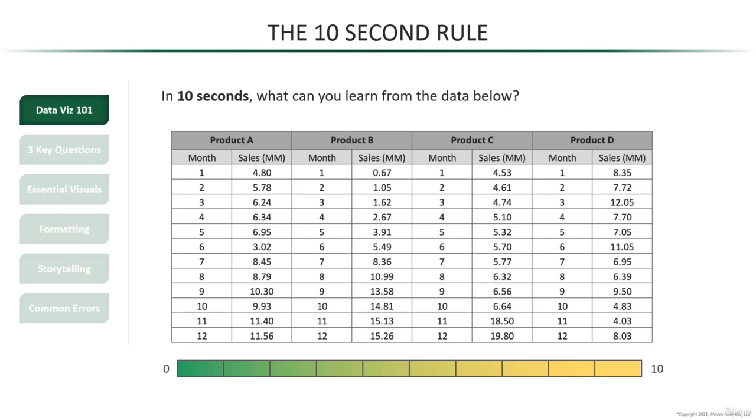Time's up. How'd you do? You may have noticed that we're looking at four separate products and their sales across 12 consecutive months. And if you really concentrated, then you may have noticed some patterns and trends here and there.